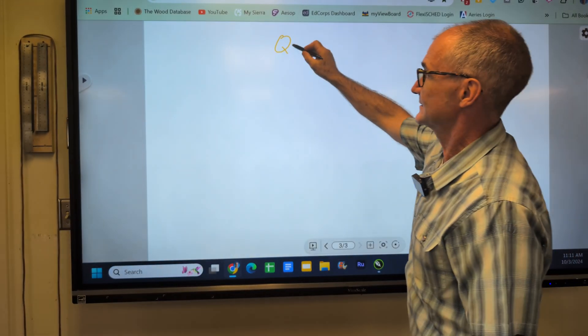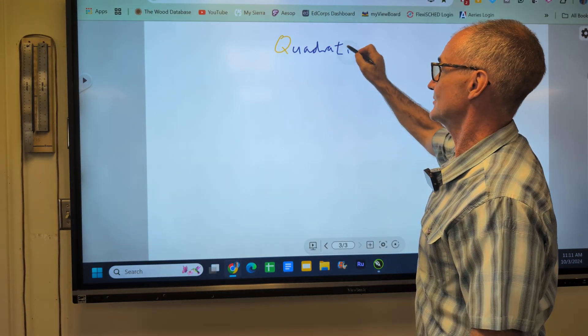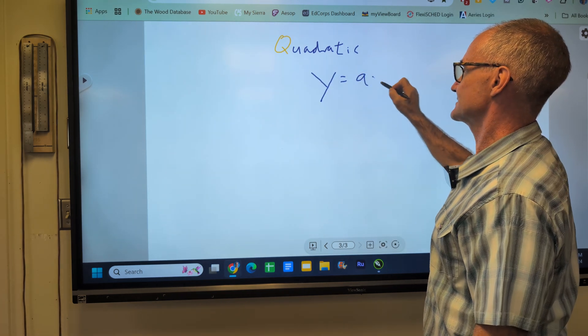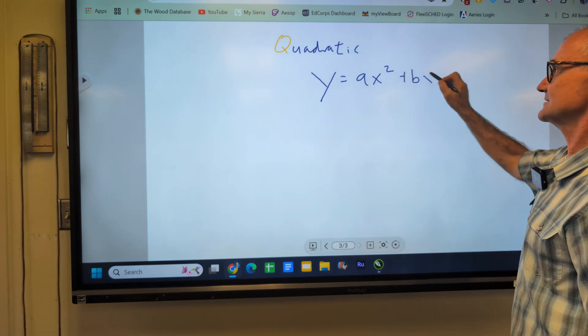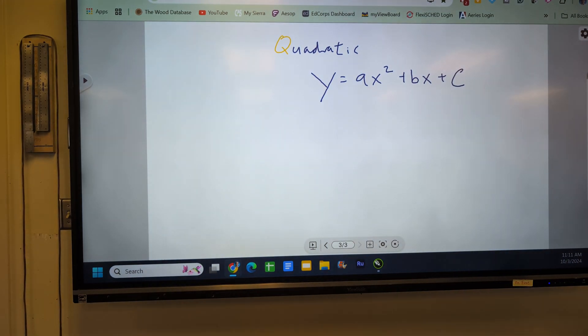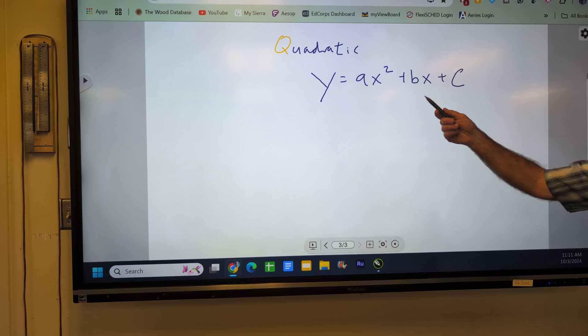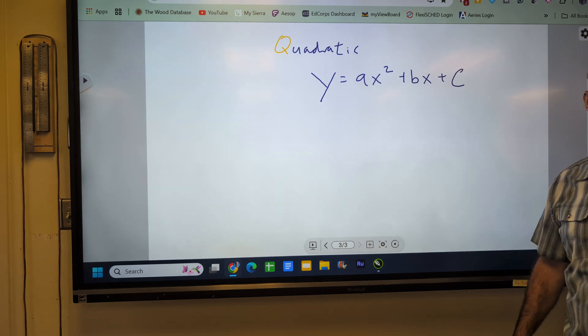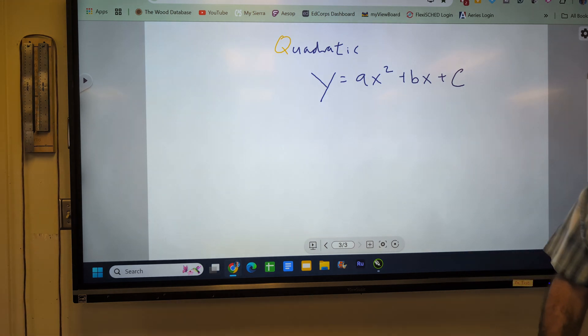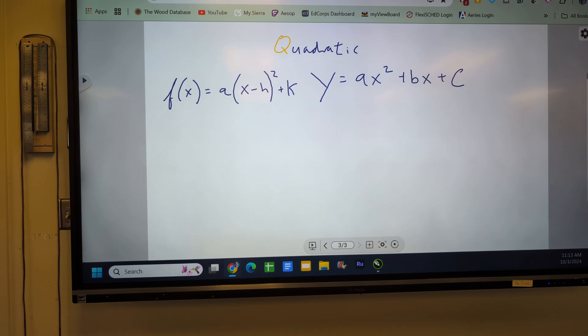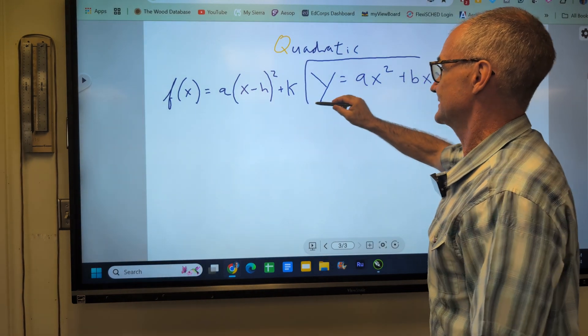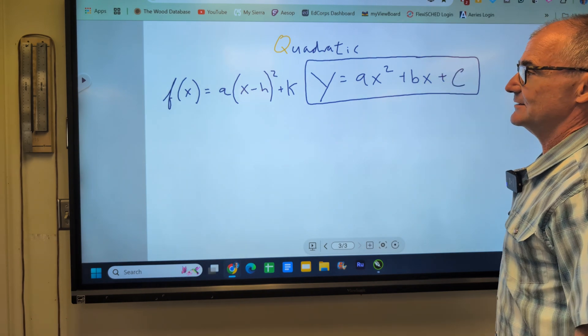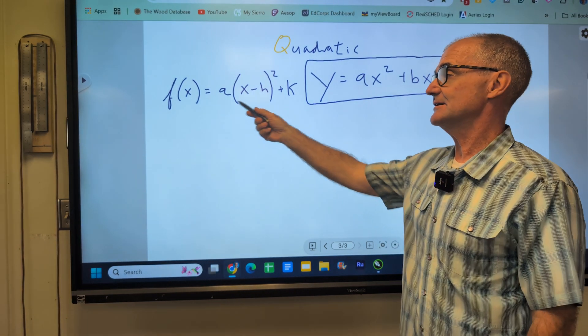So a quadratic is in the general form y equals ax squared plus bx plus c. And there are three ways to solve quadratics. One is factoring, one is completing the square, and one is the quadratic formula. And we're going to go towards that. But the next thing we're going to do is look at this quadratic and get a general form for graphing these parabolas. So here's a general equation for a quadratic.